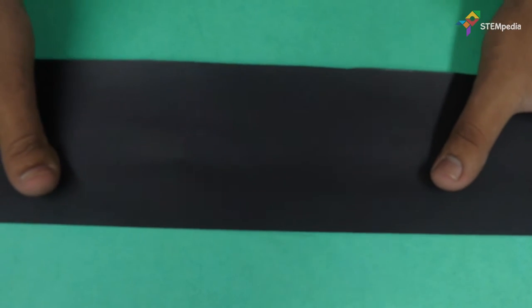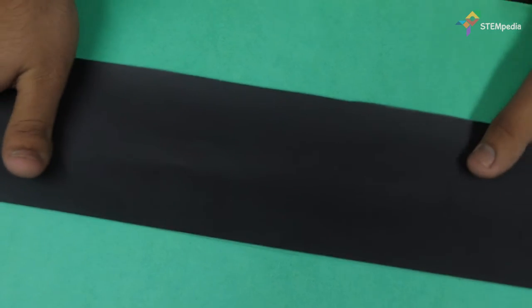And paste a strip of black chart paper of 60cm x 10cm on the marked lines. This will act as the road.